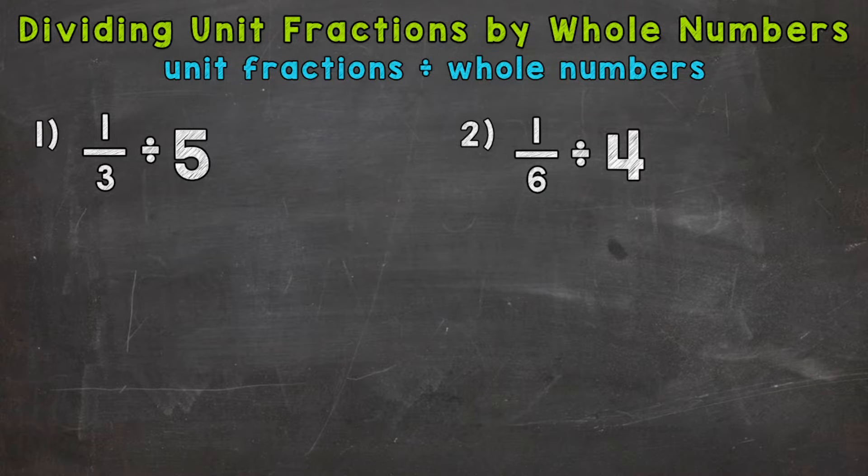So let's jump into number 1, where we have 1 third divided by 5. So essentially, we're starting with 1 third, which is a fraction less than a whole, and we're splitting or dividing it into 5 equal groups. So we're going to end up with a fraction smaller in value than what we started with, 1 third.